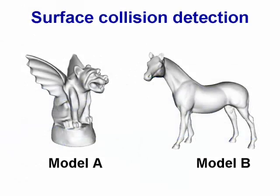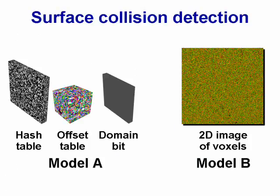Spatial hashing enables object space collision detection. We voxelize two models, A and B, enter the voxels of A into a 3D spatial hash, and the voxels of B into a 2D image. To test for collisions, we perform a rasterization pass over the 2D image, transforming the stored points of B and checking if they hit voxels in the spatial hash of A.